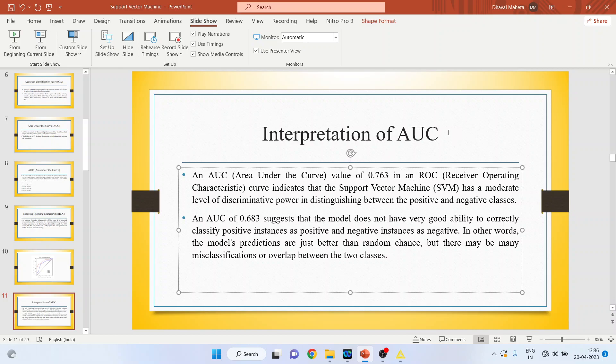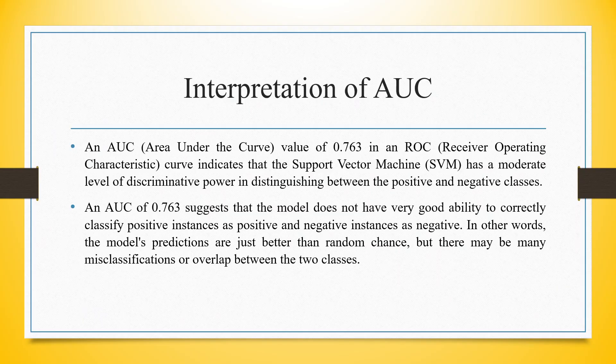An AUC value of 0.763 in an ROC curve indicates that the support vector machine has a moderate level of discriminative power in distinguishing between positive and negative classes. Let's change it from here also, 0.763. So an AUC of 0.763 suggests that the model does not have a very good ability to correctly classify positive instances as positive and negative instances as negative. In other words, the model's predictions are just better than random chance, but there may be many misclassifications or overlaps between these two classes.